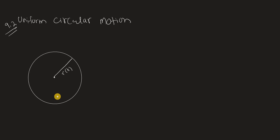This video is on uniform circular motion. Consider a particle moving in a circle. R(t) is the position vector of the particle, given by r0·cos(ωt)î + r0·sin(ωt)ĵ, where r0 is the radius of the circle and ω is omega.